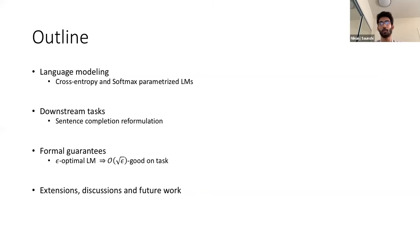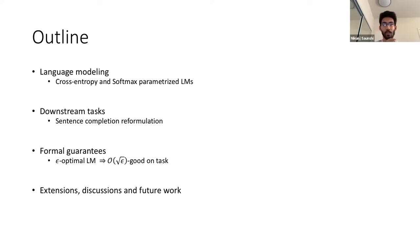The outline for the rest of the talk: I'll first summarize the setting for language modeling — the objective function and parameterization common in practice. Then I'll describe the downstream classification tasks and how they can be reformulated as sentence completion problems. Then we'll show the formal guarantees for epsilon-optimal language models. I'll pause here to see if there are any questions about the setup. Okay, great, so I'll move ahead with describing language modeling.